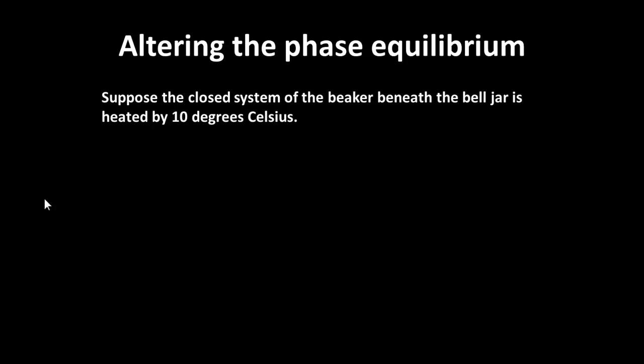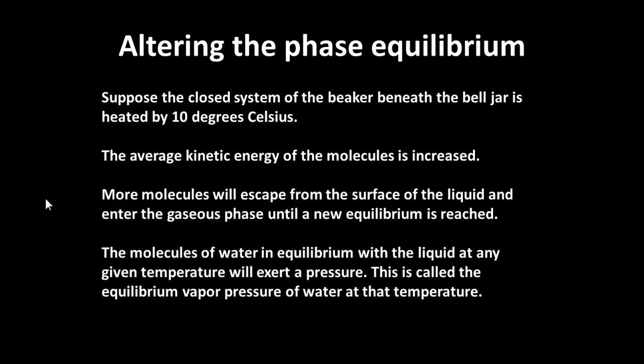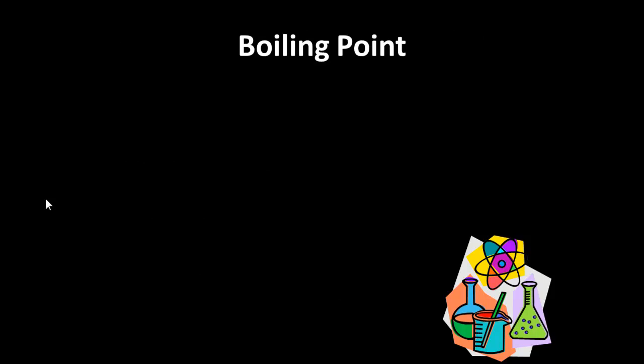Suppose you have a closed system of a beaker beneath the bell jar and we increase the temperature by 10 degrees. The average kinetic energy of the molecules is going to be increased. Initially, more molecules can escape from the surface of the liquid and enter the gaseous phase, and that will continue until you get a new equilibrium. Molecules of water in equilibrium with the liquid exert a pressure called the equilibrium vapor pressure of water at that temperature.